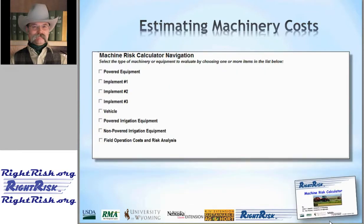Let's take a look at how the software is actually used to estimate these values. After the initial screen, we get a listing of various categories of machinery items the software can estimate the cost of, ranging from powered equipment to various implement items. We can have up to three different implements, and the software can also estimate costs for vehicles, powered irrigation equipment, and non-powered irrigation equipment.